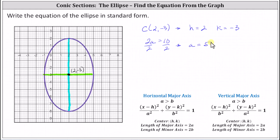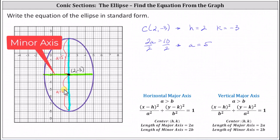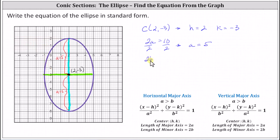This also indicates the distance from the center to the top of the ellipse — this distance here — can be labeled a, which is five. And the distance from the center to the bottom of the ellipse is also a, which is five. Finally, notice the length of the minor axis is six units, which indicates two b equals six. Dividing both sides by two, we have b equals three. This also indicates the distance from the center to the right side of the ellipse is b, or three units. And the distance from the center to the left side of the ellipse is also b equals three.